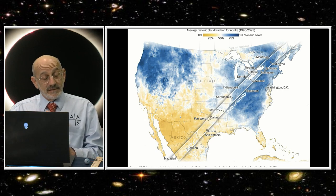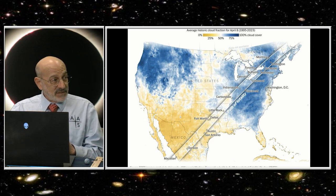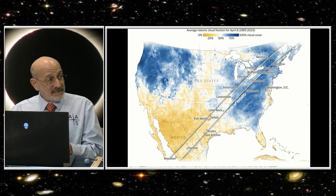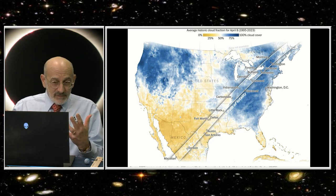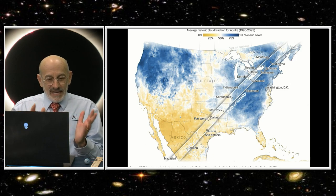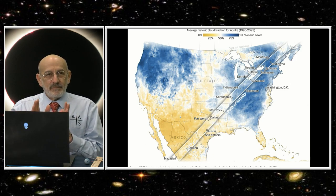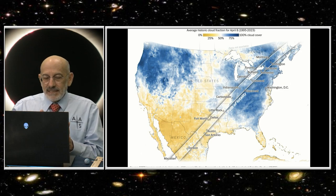The northeast, on the other hand, not so great. Mostly cloudy skies in early April. But that's what you expect based on year-to-year average statistics. This past year we had a beautiful clear day on April 8th in New Hampshire, and in Texas it was cloudy.